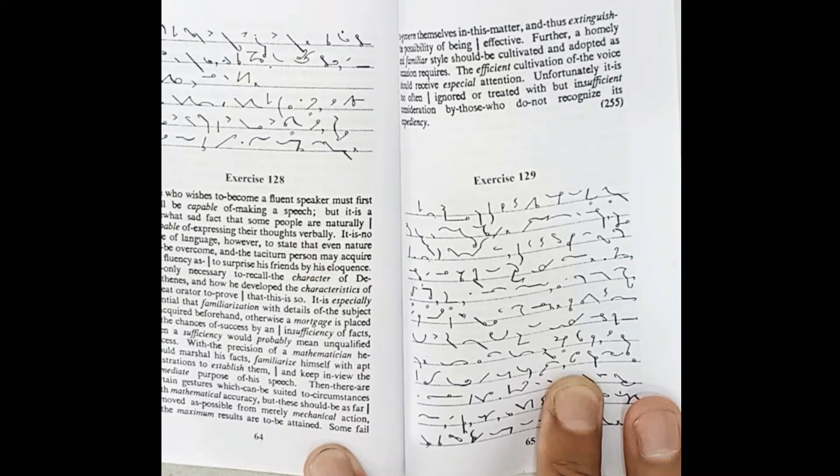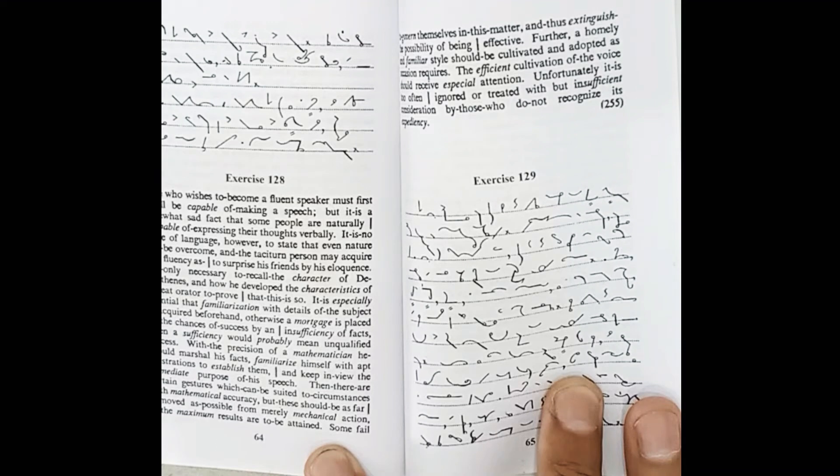It is no abuse of language, however, to state that even nature may be overcome, and the taciturn person may acquire such fluency as to surprise his friends by his eloquence.